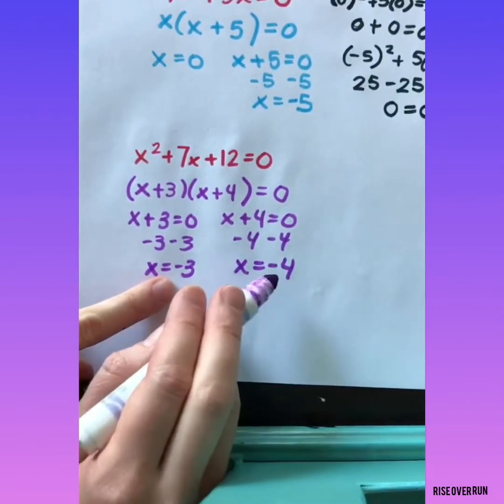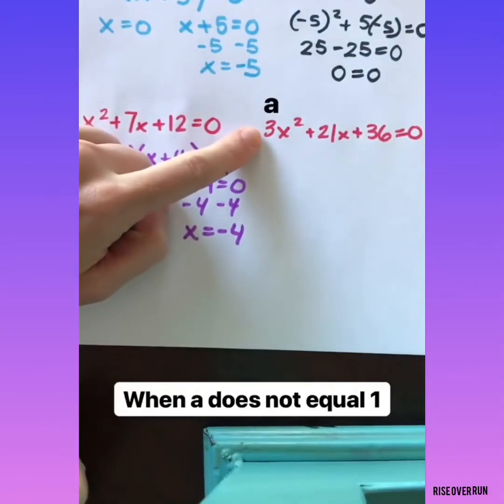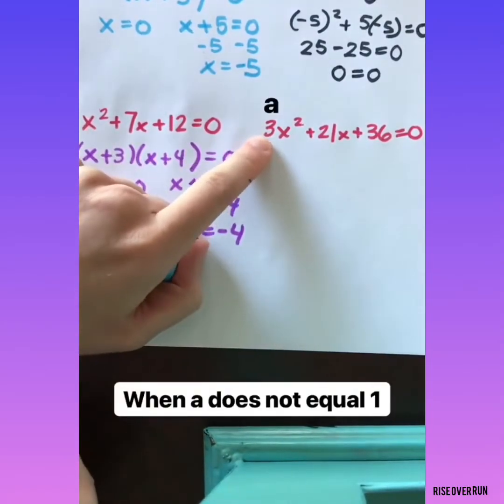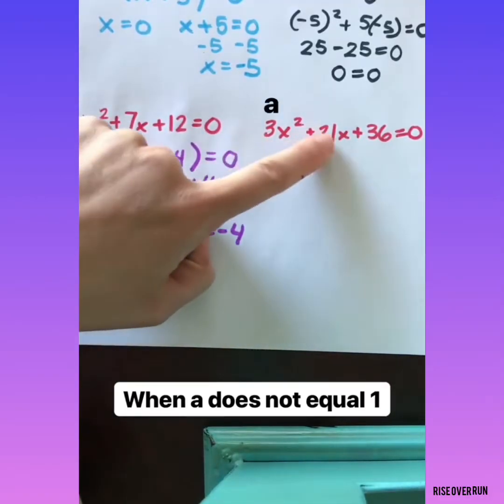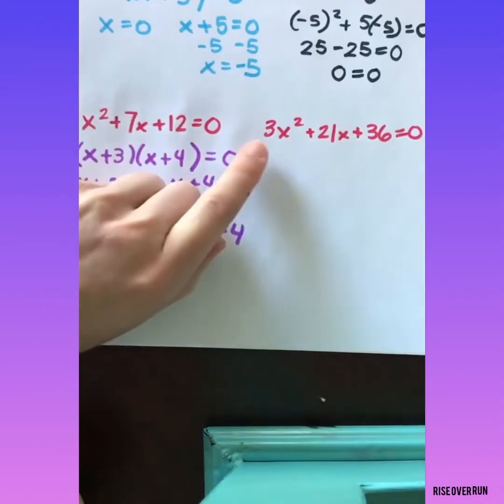Let's factor this one and try to solve. Remember, this first coefficient is called a. Anytime a is a number other than 1, see if you can factor it out of each term. Can we factor a 3 out of all these terms? Yeah, let's do that to make the problem a little bit simpler.